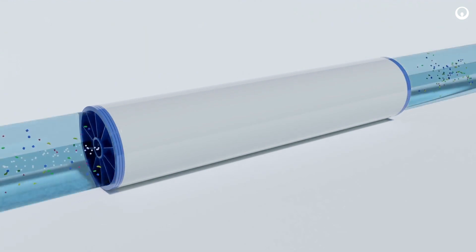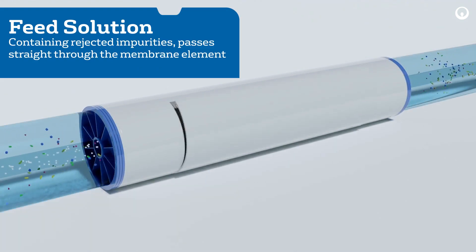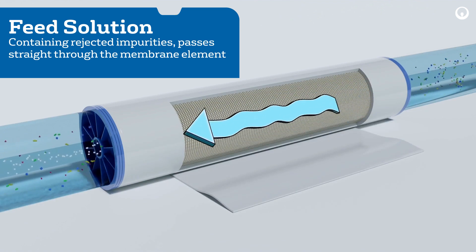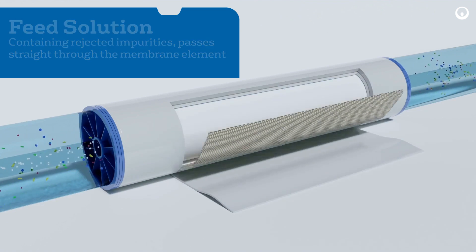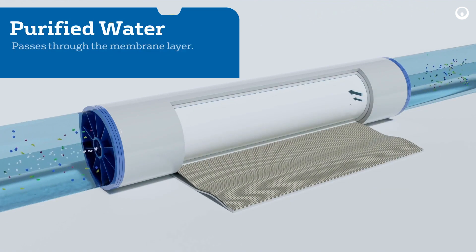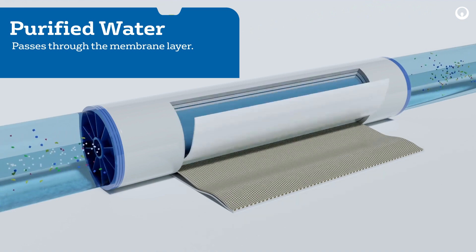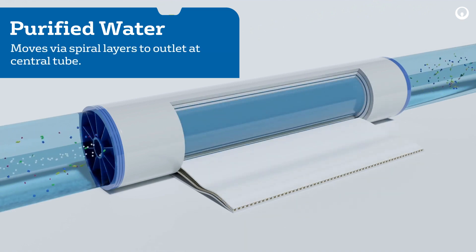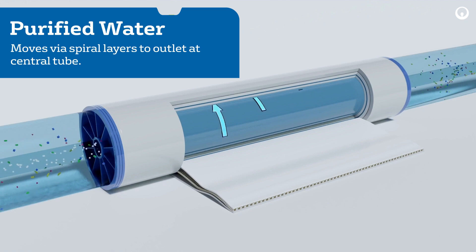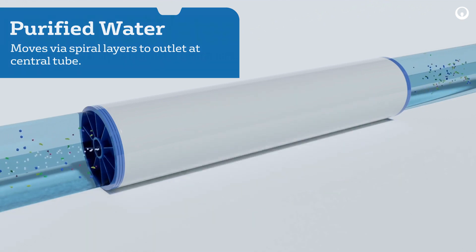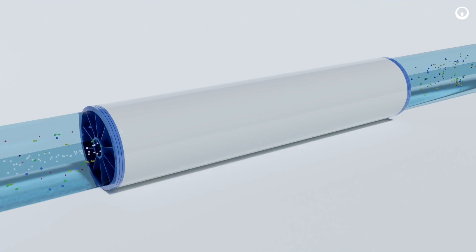As we examine the flow for a RO that is making pure water, we see the feed spacer creates a channel for flow and turbulence. As the turbulent cross flow comes in contact with the membrane, pressure forces water through the membrane. The water then flows in a spiral to the perforated central tube and is then collected at the other end of the element.